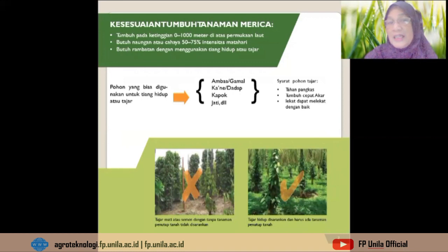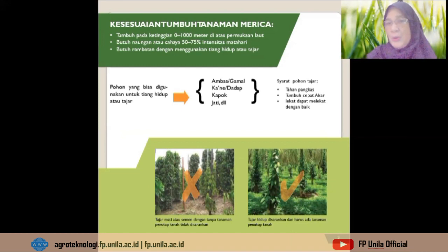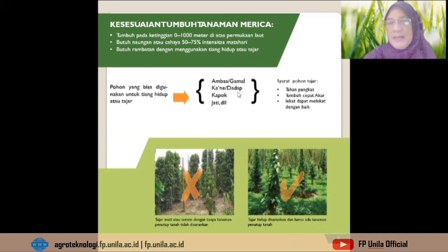Kesesuaian tumbuh tanaman merica biasanya tumbuh pada ketinggian 0 hingga 1000 meter di atas permukaan laut, membutuhkan naungan atau cahaya 50 hingga 75 persen intensitas matahari. Butuh rambatan dengan menggunakan tiang hidup atau tajar. Pohon yang biasa digunakan untuk tajar yaitu tanaman gamal, dadap, kapok, atau jati. Syarat pohon tajar adalah tahan pangkas, tumbuh cepat, dan akar lekat dapat melekat dengan baik.